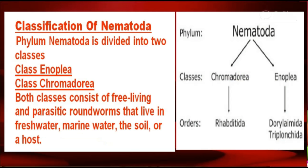Nematoda is divided into two classes: class Enoplia and class Chromadoria. Both classes consist of free-living and parasitic roundworms that live in freshwater, marine water, soil, and host organisms.